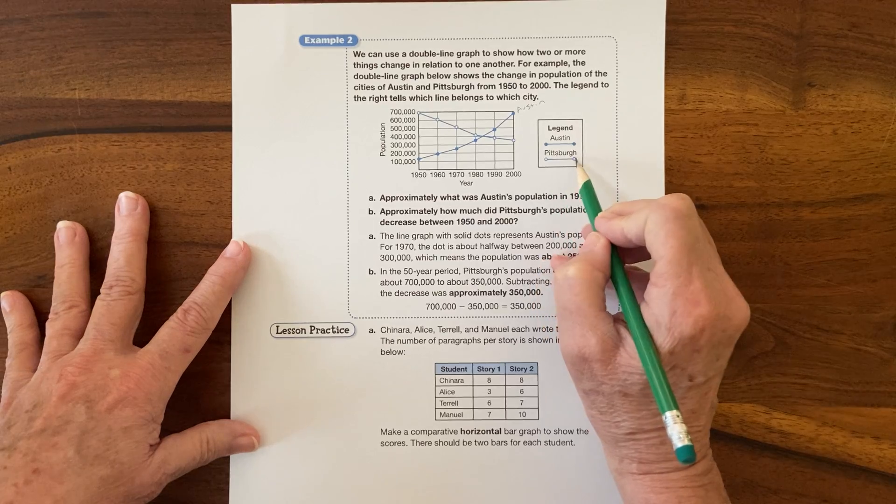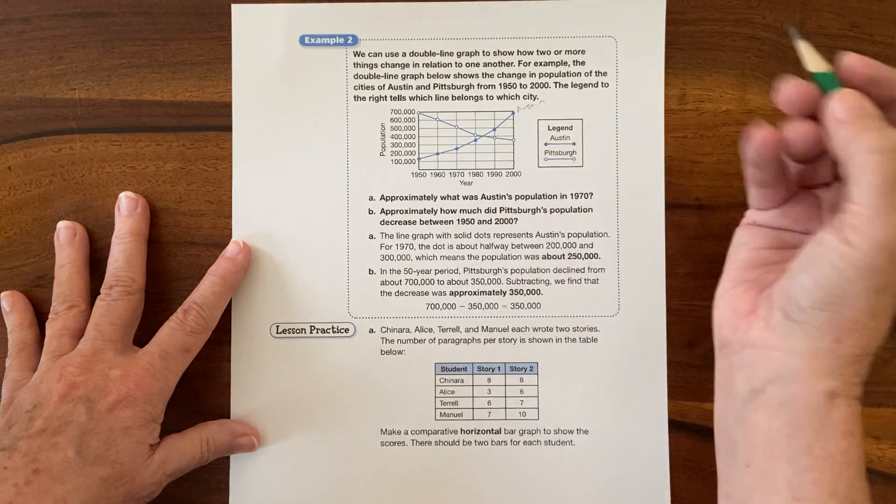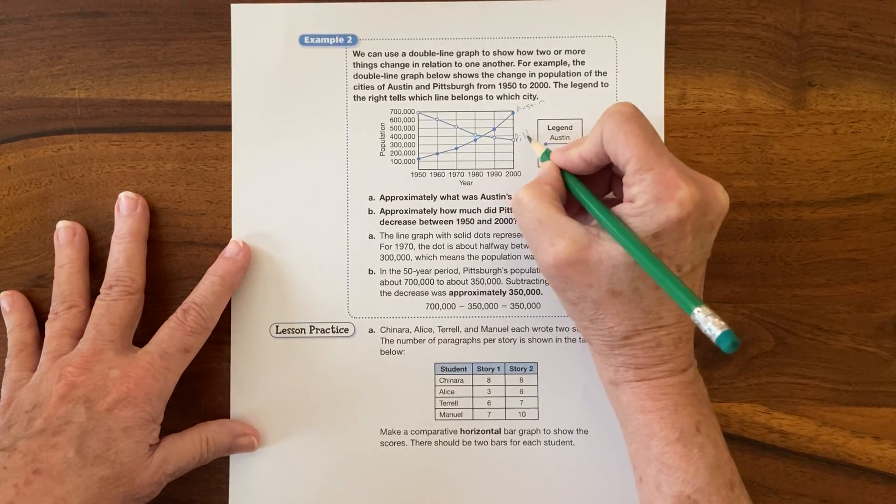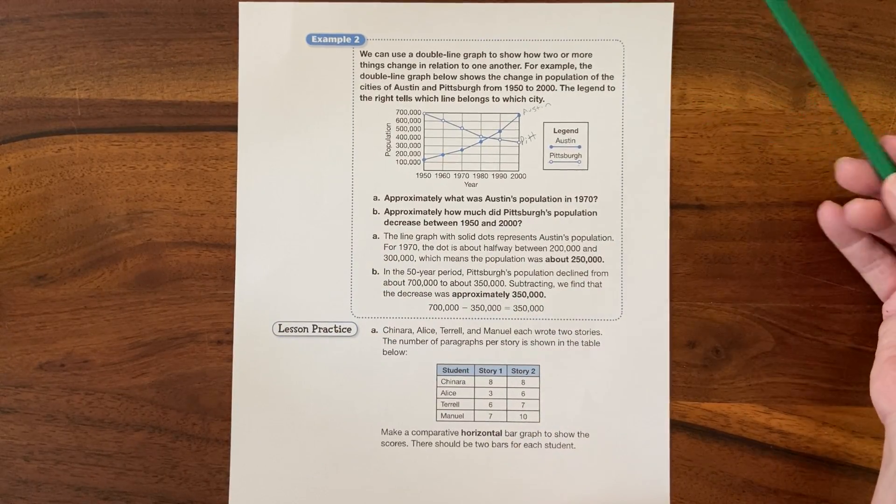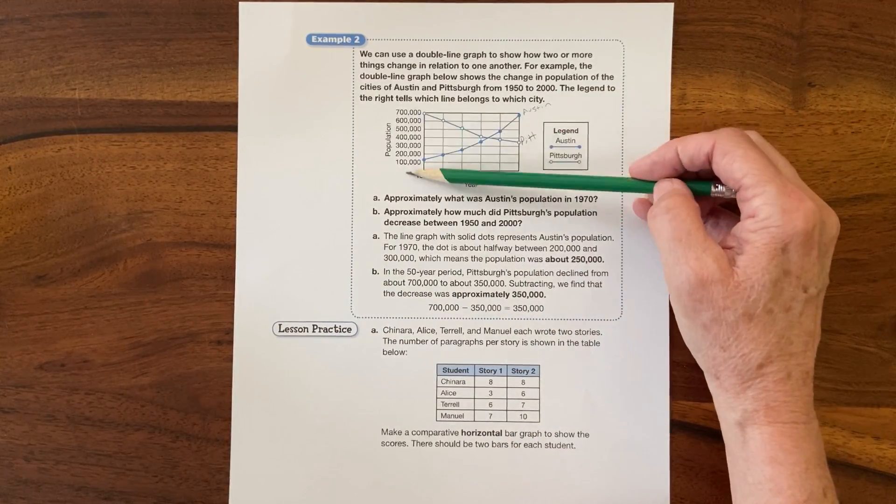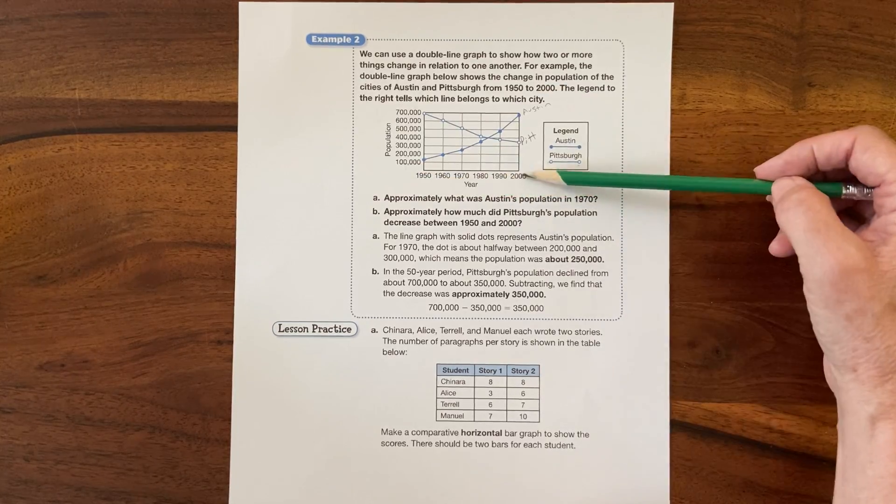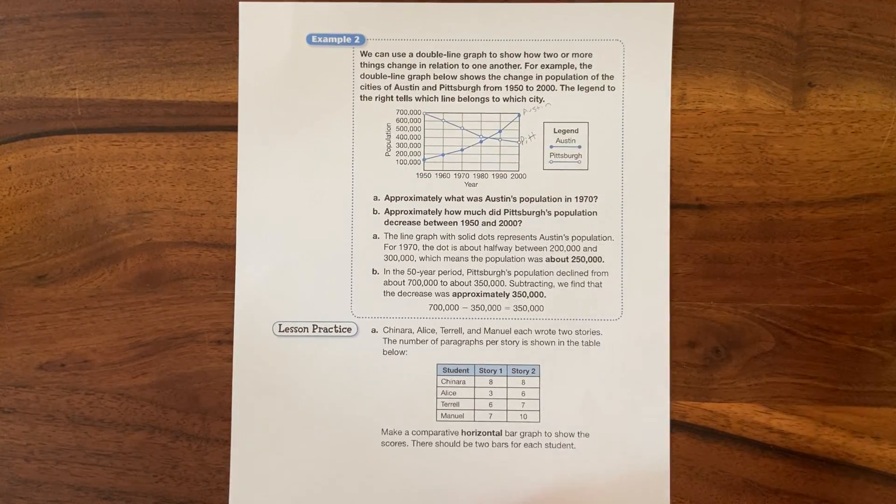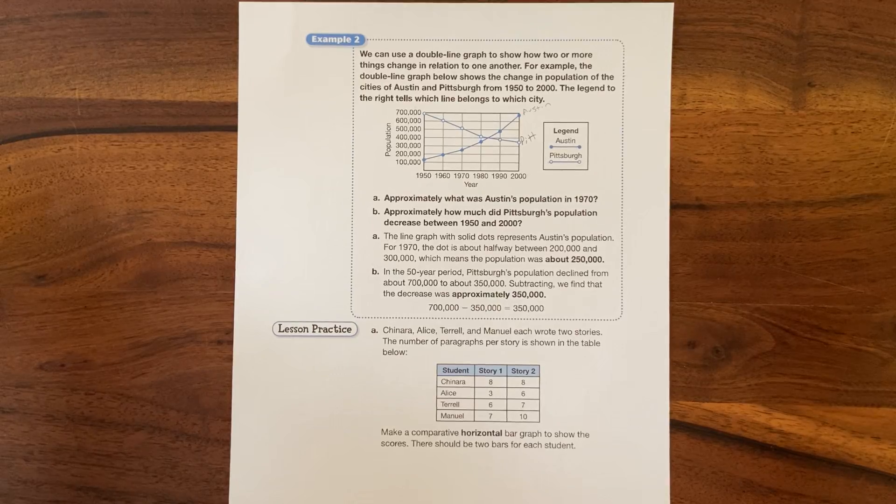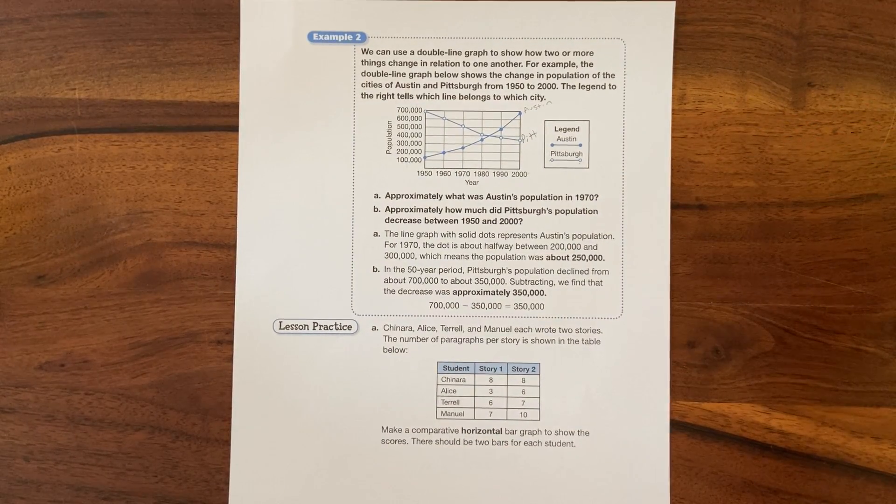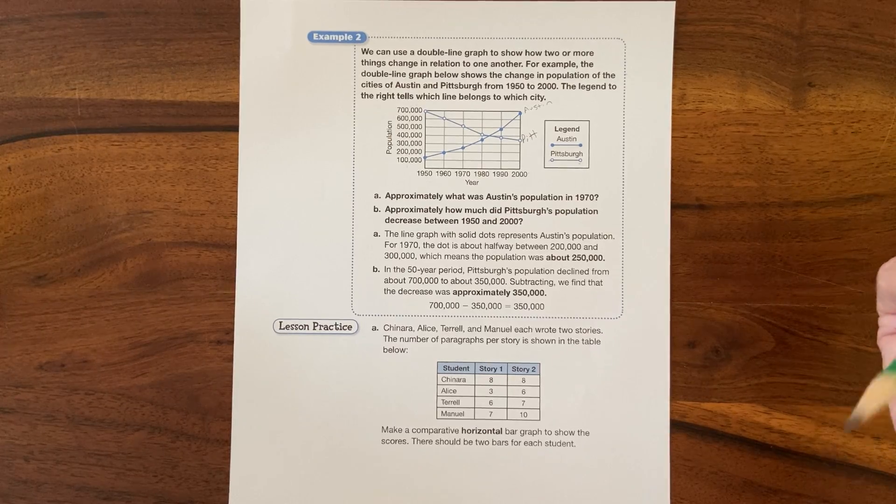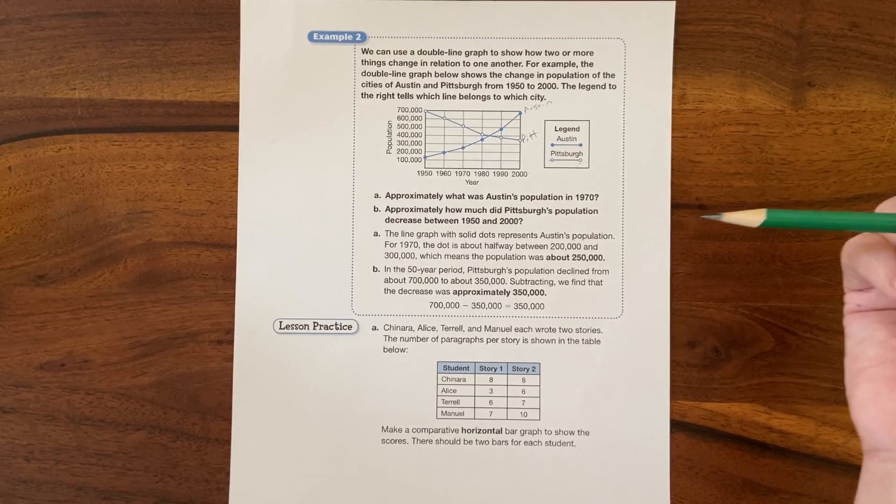And the lighter line with the open circles is Pittsburgh, so we'll put Pitt right there. And we know that this is the population numbers and this is the years. I like to look at all of my information ahead of time before I actually read the questions. Some people work the other way - you still have to know both things, you can do it in whichever order you'd like.